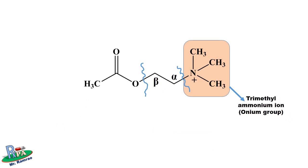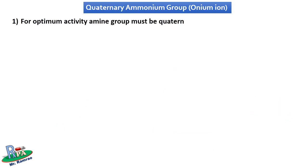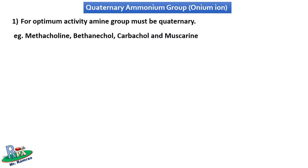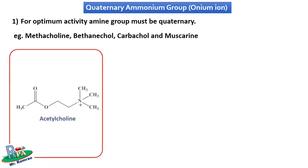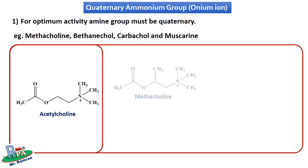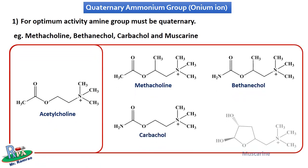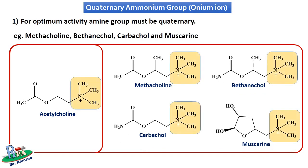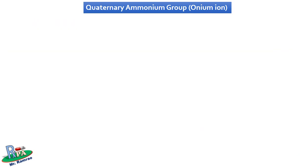Starting with the trimethylammonium or onium group: the first SAR point is that for optimum activity, the amine group must be quaternary — that means nitrogen must carry a positive charge for cholinergic activity. Examples include methacholine, bethanechol, carbachol, and muscarine. As in the case of acetylcholine, all these important molecules also contain a quaternary ammonium group, meaning it is essential for cholinergic activity.